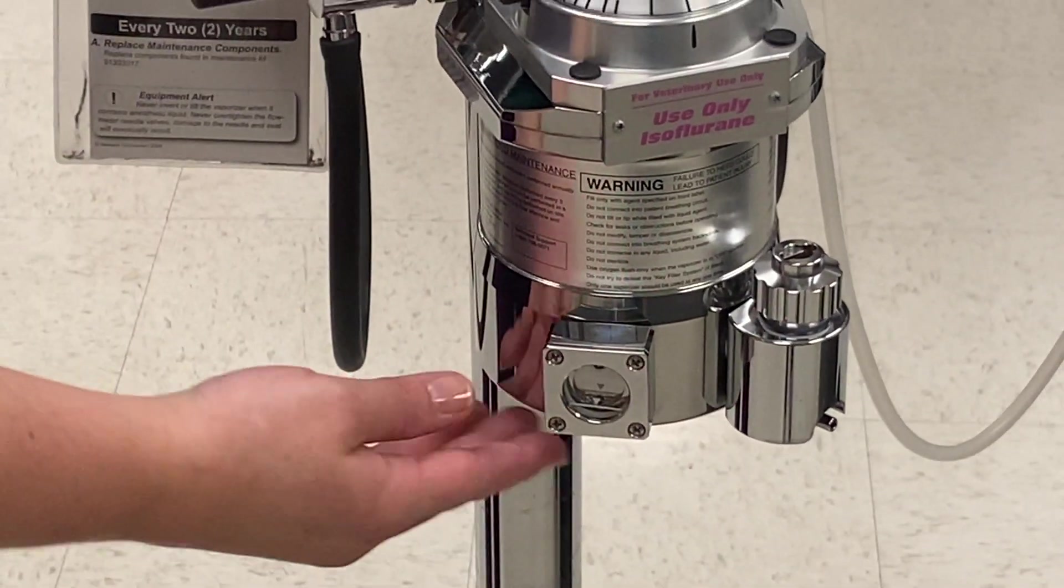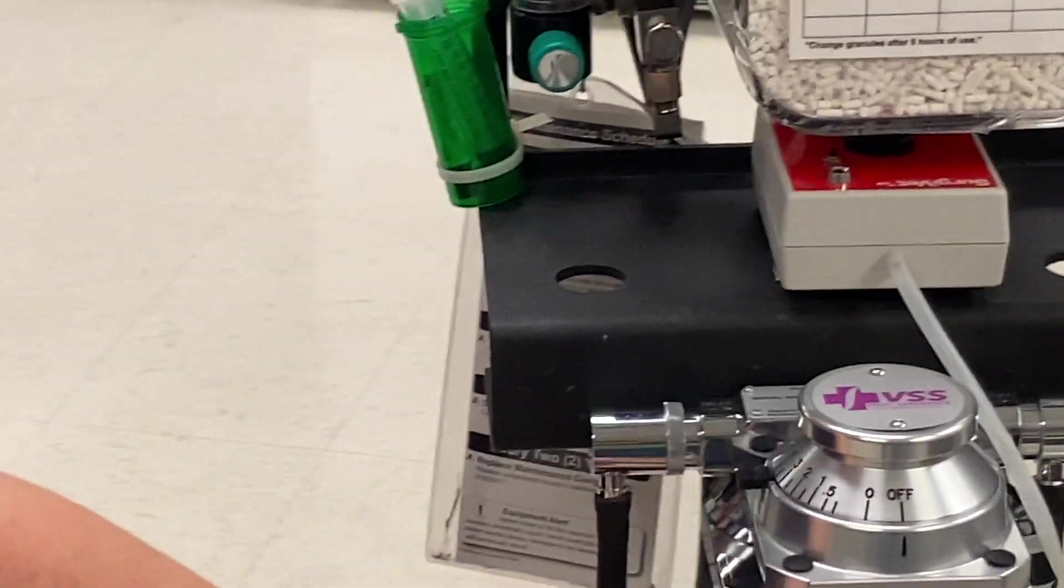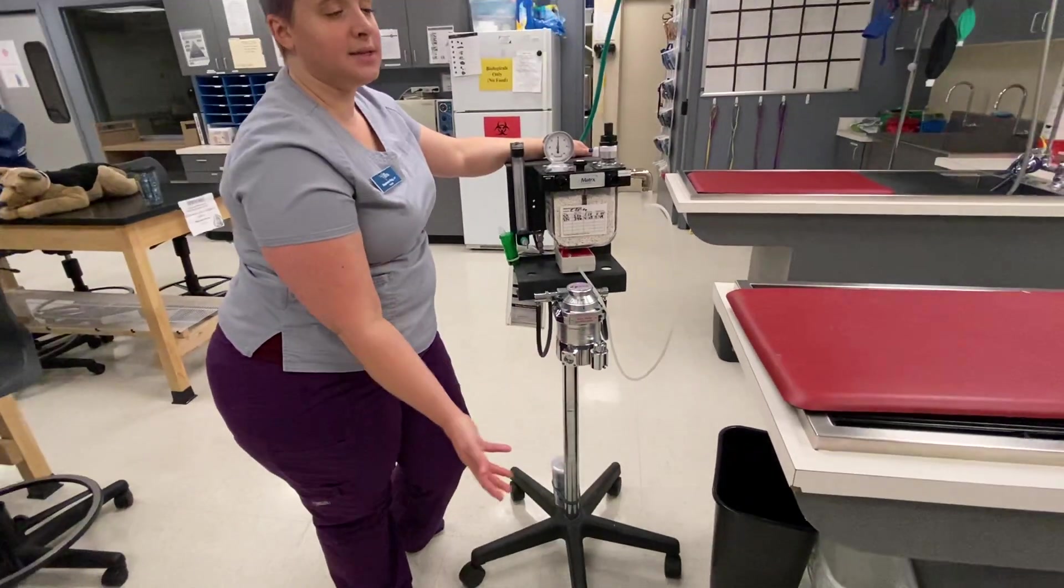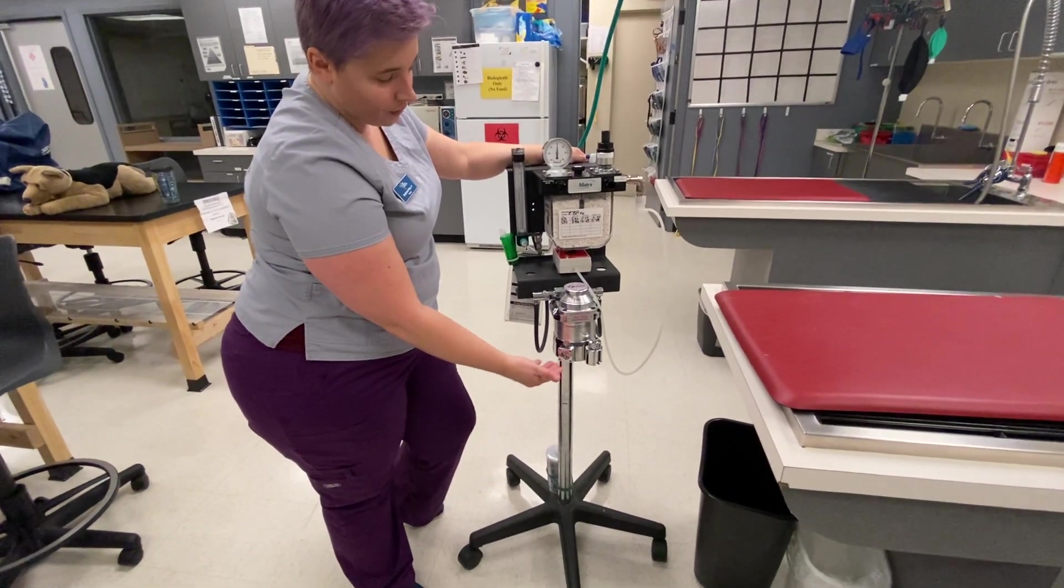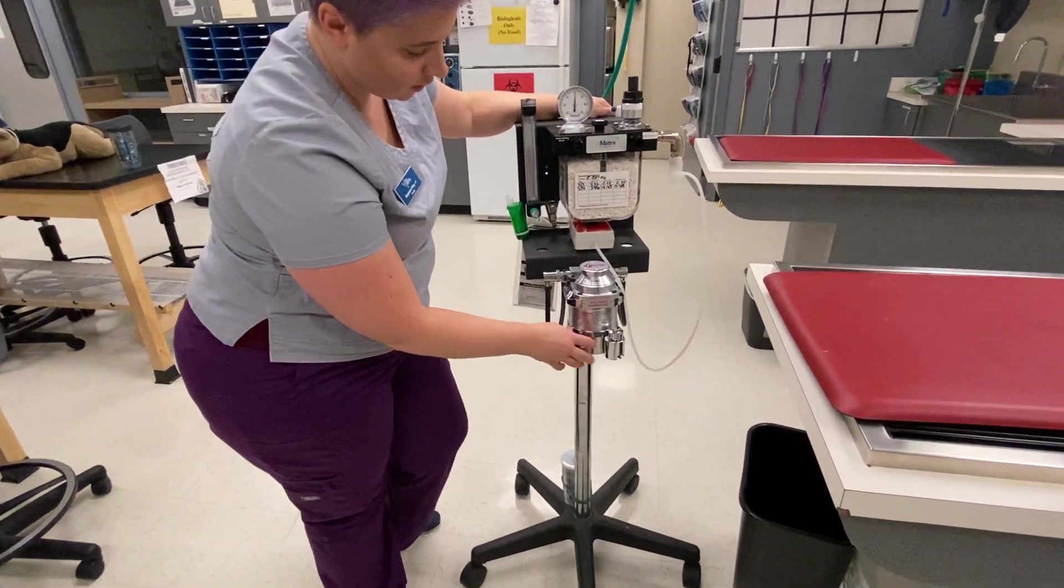You want your meniscus to be at this top arrow is what you're looking for. So we'll fill it to there. The rule here at Pima is we always want it full and that's really what you should do anywhere you work. Anytime you're about to start an anesthetic procedure, you don't know how long it's going to be. You don't know the last time someone else put isoflurane into the machine. So go ahead and just fill it all the way up. You're not hurting anything.